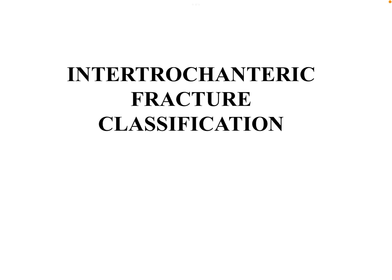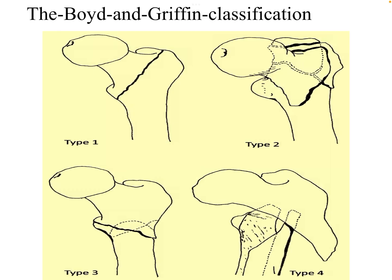In this video we will discuss the classification of intertrochanteric femur fractures. We have a few classifications for intertrochanteric femur fractures. The most commonly used is the Boyd and Griffin classification. According to Boyd and Griffin, intertrochanteric fractures are of four types.